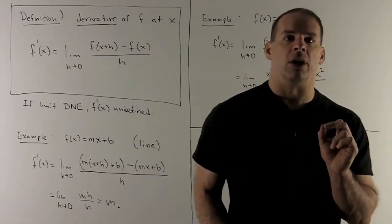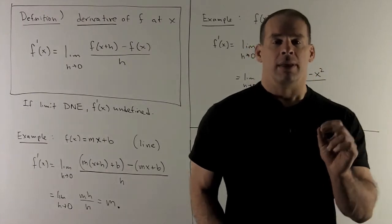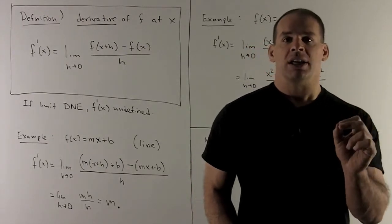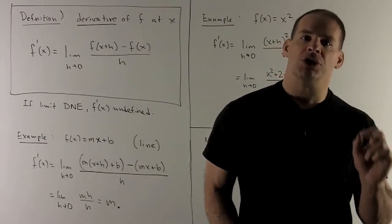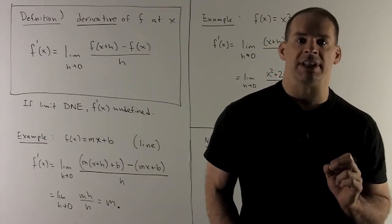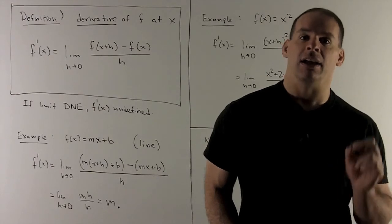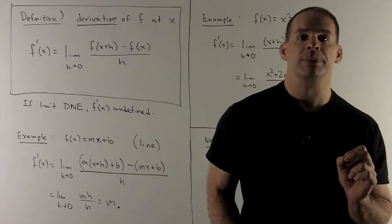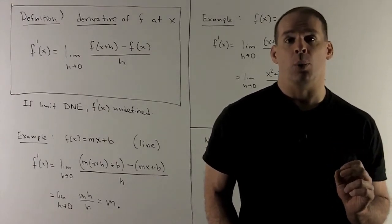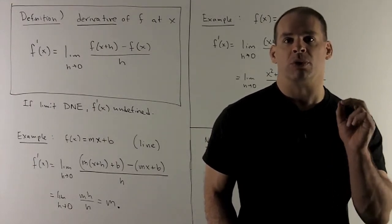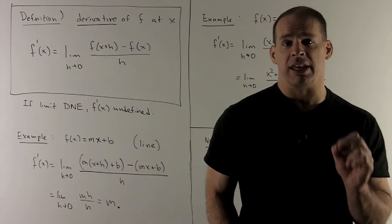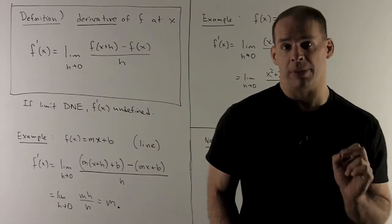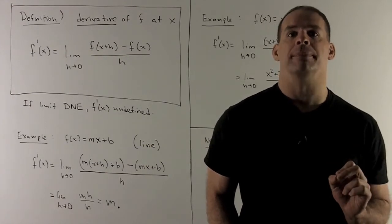What we're doing here is this function is going to take a point, and what it's going to return is the slope of the tangent line, if it exists. So whenever you hear the word derivative, the first thing you should think is slope of the tangent line.